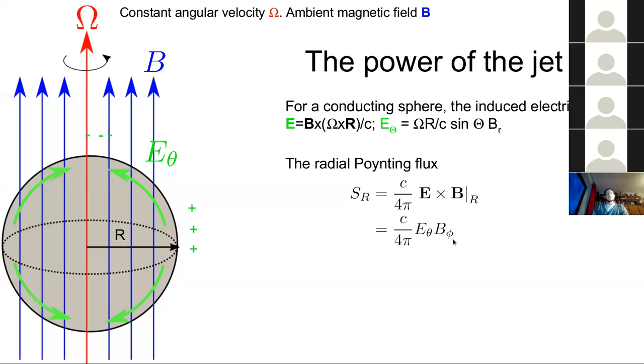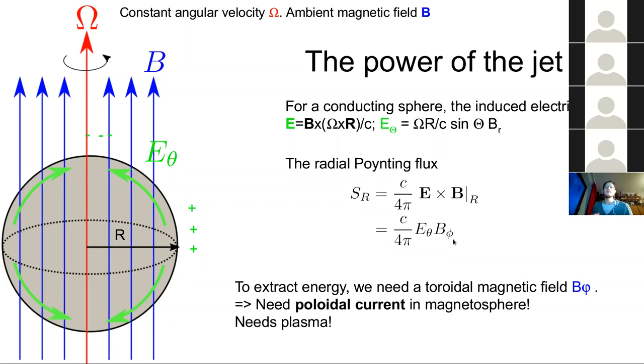So we have to consider the radial Poynting flux here. And that's E cross B. And the component that's relevant here is if you're looking at the radial components, V theta B phi. So what this tells you, next to this V theta component that we just made by rotating the sphere, you also need a toroidal component, which is B phi. And to get a toroidal component, that actually means you have to have some kind of poloidal current that closes in the plane of your screens.